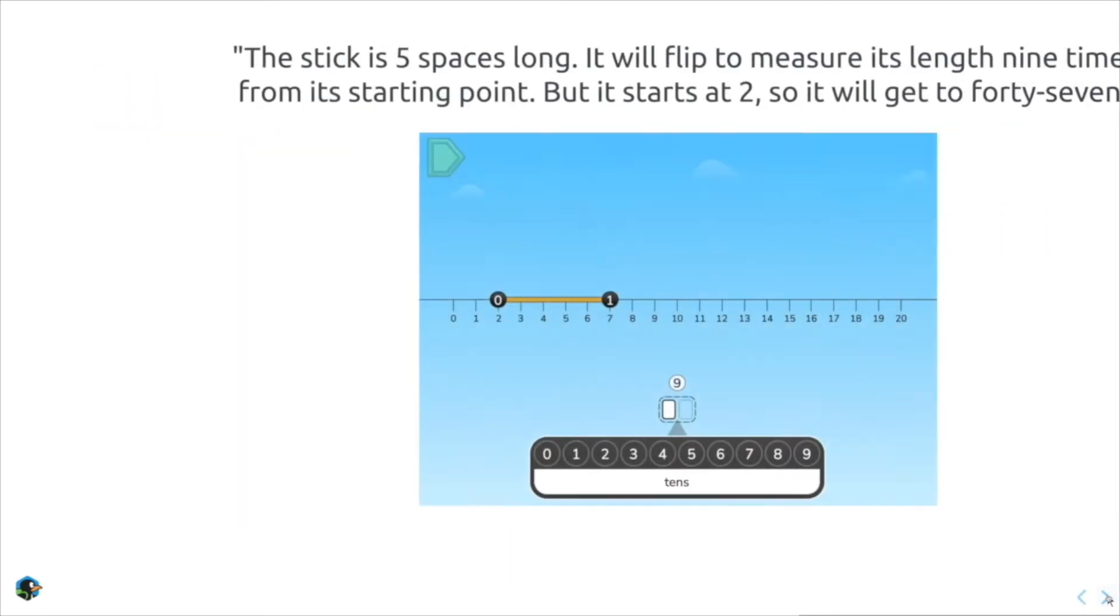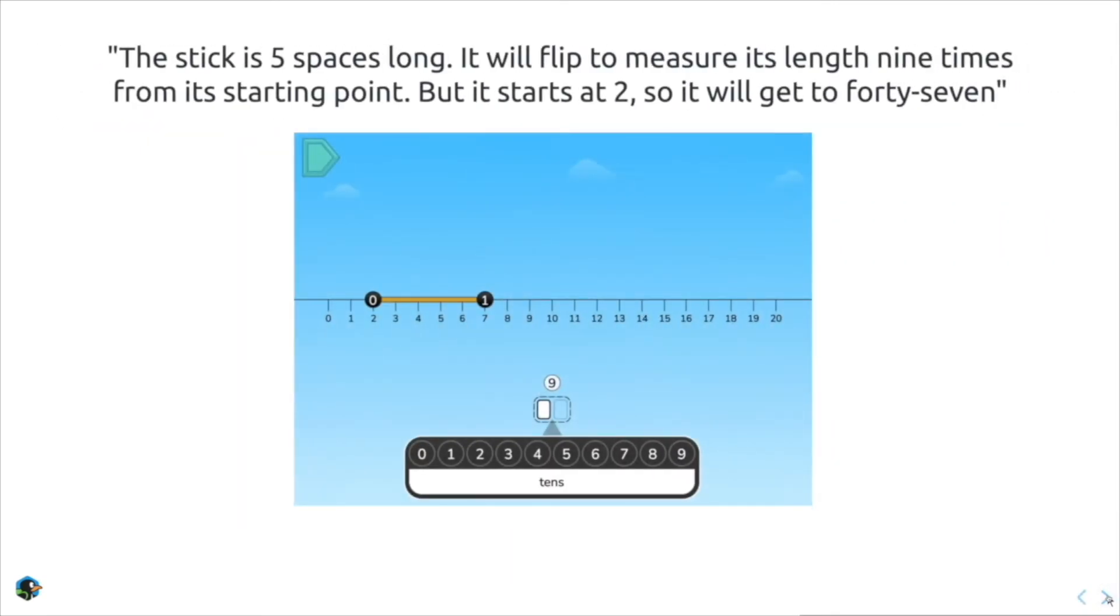Now, let's look at an explanation from an older student. The stick is five spaces long. It will flip to measure itself nine times from the starting point. But it starts at two, so it will get to 47. And of course, this is fabulous.